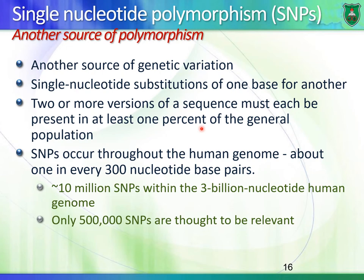This is an important point. SNPs are spread throughout the human genome — there is one SNP for every 300 base pairs. We have a total of about 10 million SNPs in our genome. That's a lot, but only half a million are important or relevant.